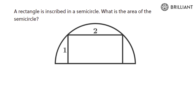A rectangle is inscribed in a semicircle — that means all its points are touching the semicircle. What is the area of that semicircle? You can pause the video and try it yourself. This question is taken from brilliant.org as usual.